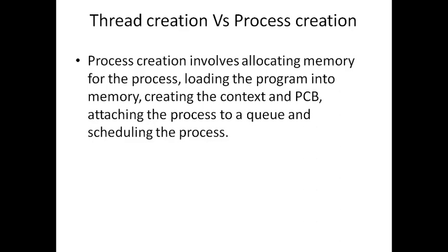After loading, the program has to wait in one of the queues in the operating system and then finally get scheduled on the CPU. All this activity has to be carried out for process creation—especially allocation of memory. And similarly, if the process needs some resources, those resources also have to be allocated to the process. All that comprises the steps needed for creation of a process.